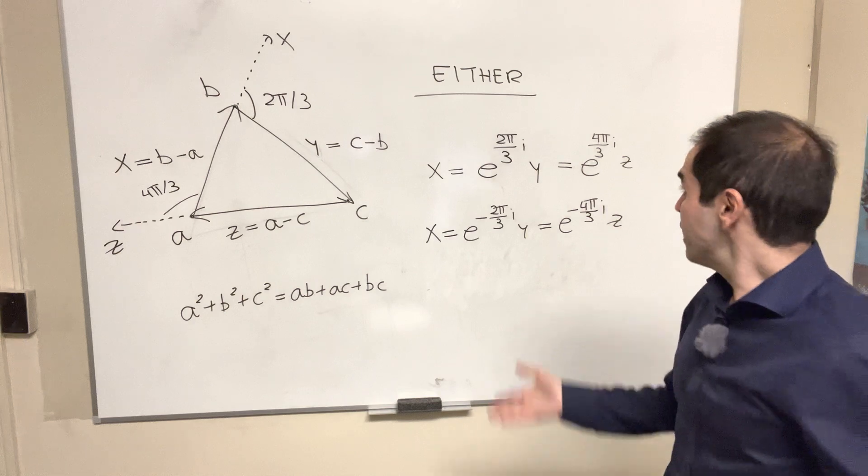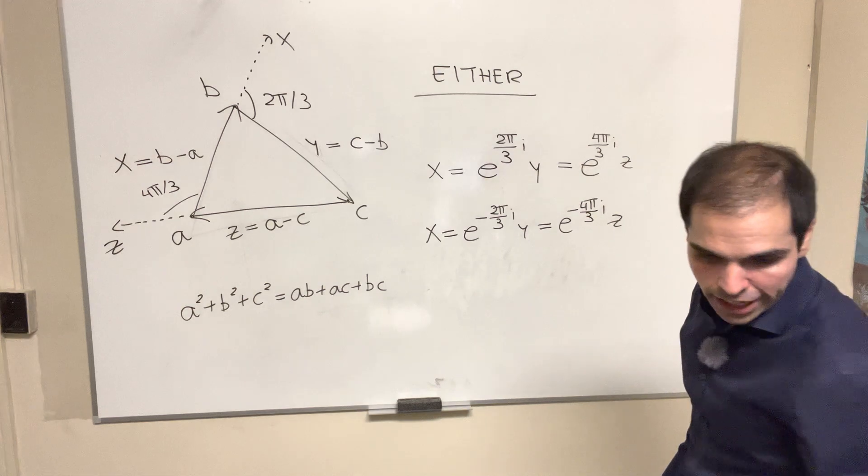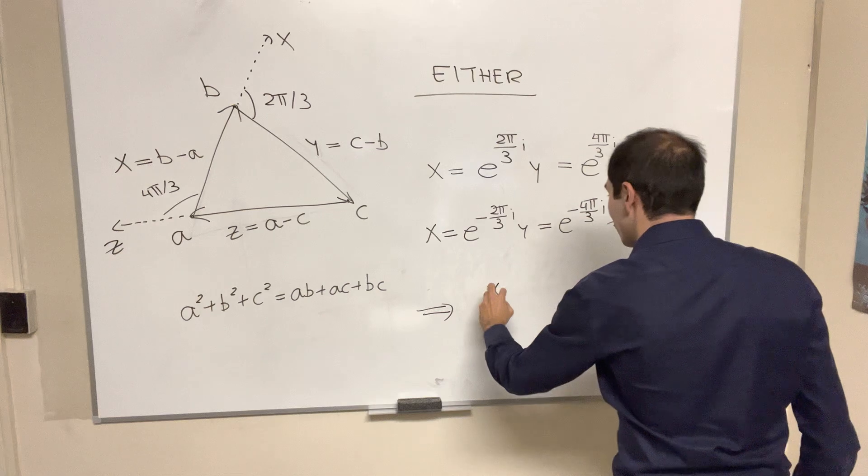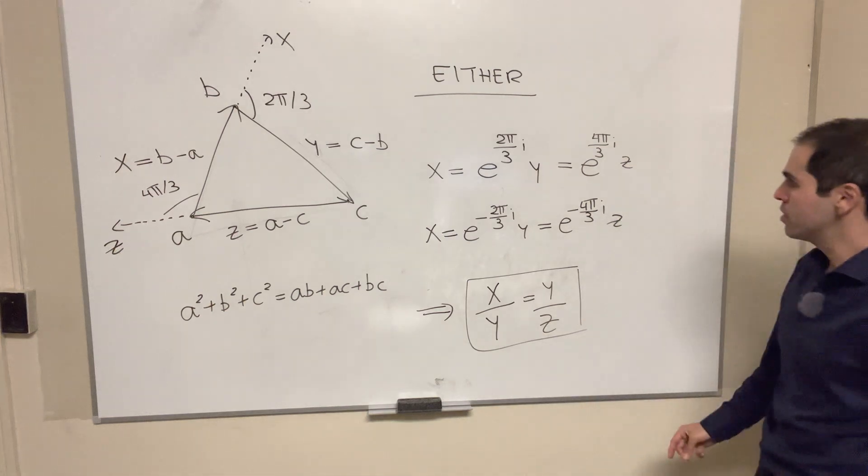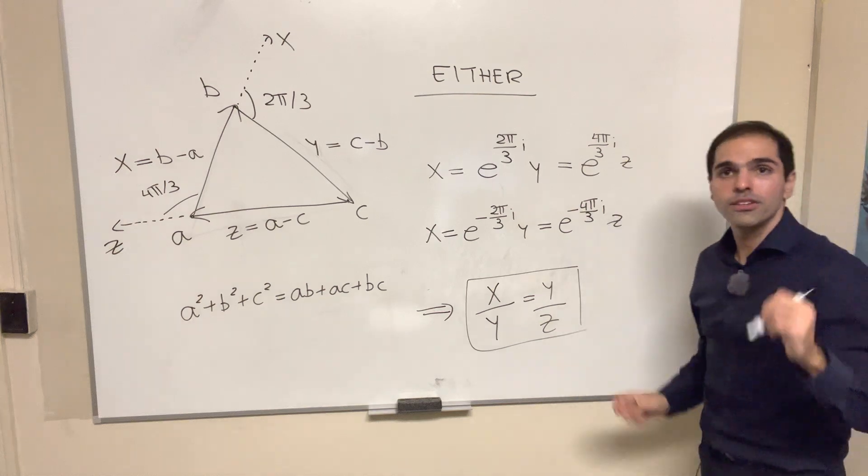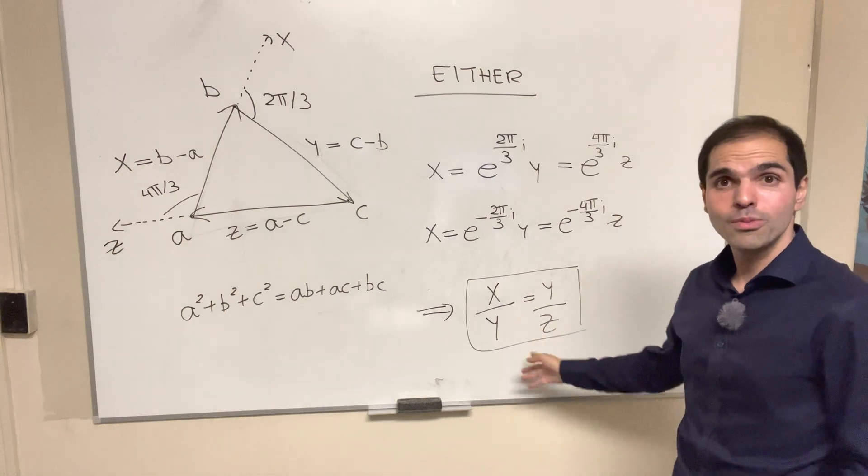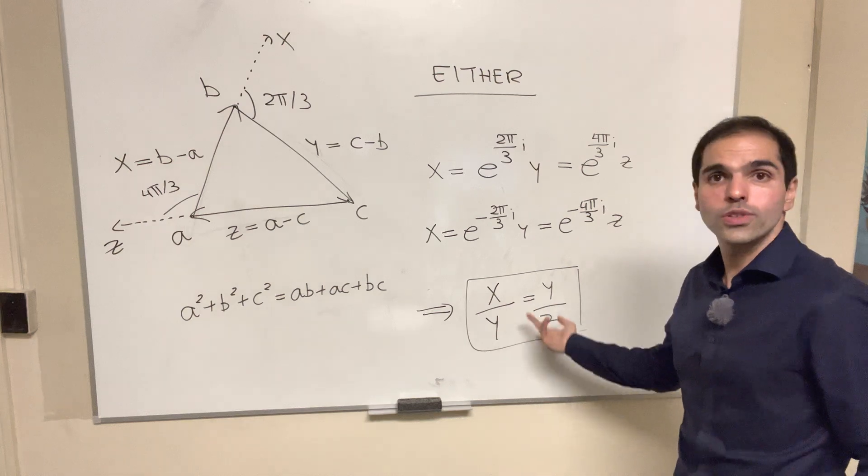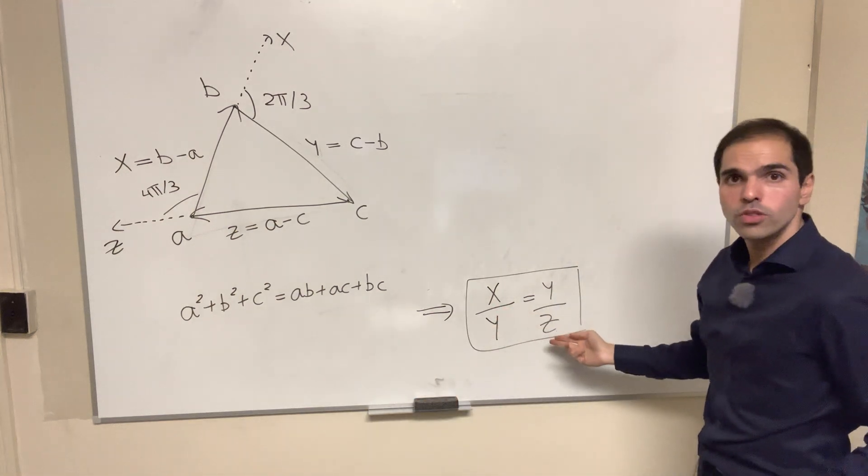But in the end, it doesn't matter because in either case, the ratios are the same. So in either case, x over y equals e of 2π over 3 i or e of minus 2π over 3 i. And it turns out this is enough to help us solve our problem because all we need to do is cross multiply and use the definitions of x, y, and z. So we get xz equals y squared.